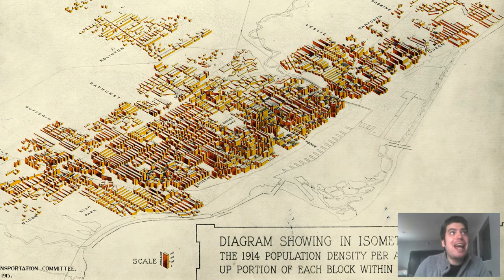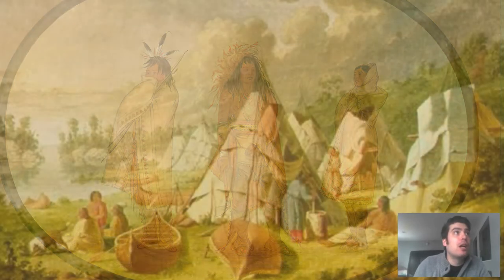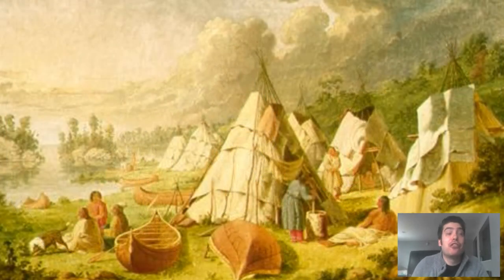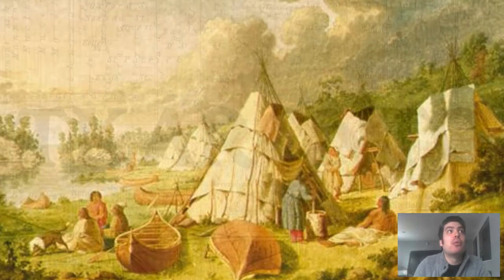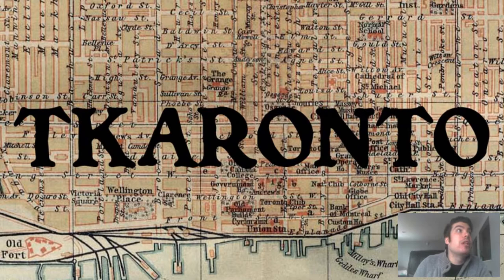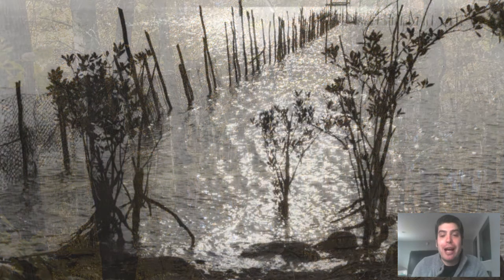If we look at the history of Toronto, we can see that when Europeans arrived in the area, the vicinity was inhabited by Iroquois Indians who had displaced the original settlers, the Huron, which had occupied the area for centuries before the 1500s. The name Toronto is likely derived from the Iroquois word meaning "place where trees stand in the water."